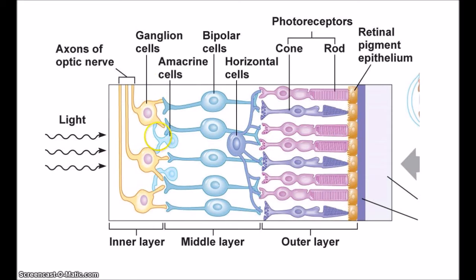There are a couple of exceptions. First, the ganglion cells have to connect back to the brain. Where the axons of the ganglion cells leave the eye, there are no photoreceptors, and that causes the blind spot. There are also blood vessels over the surface of the retina, which supposedly can be revealed if you shine a torch into your eyes at an angle and jiggle it — you can apparently see shadows of the blood vessels, though it never worked for me.